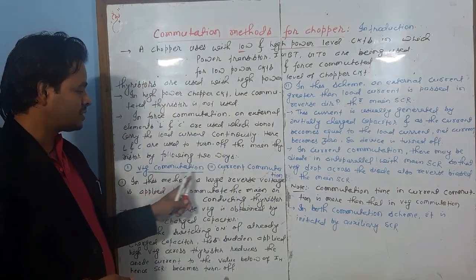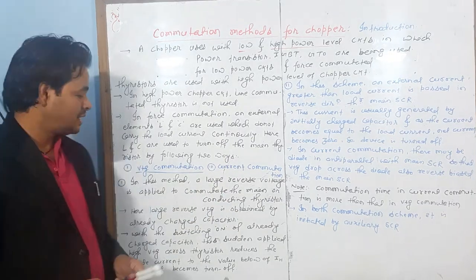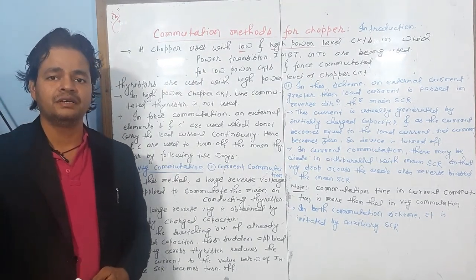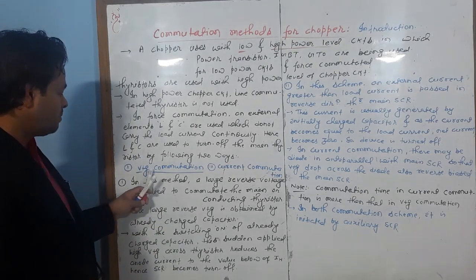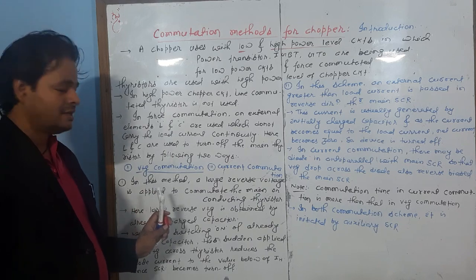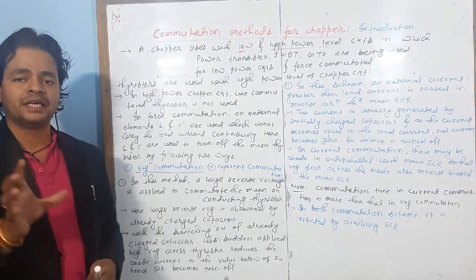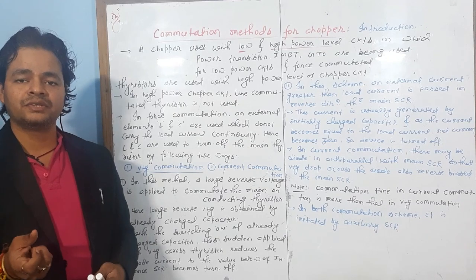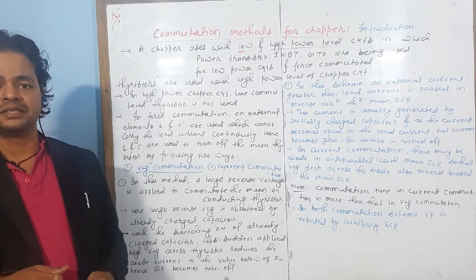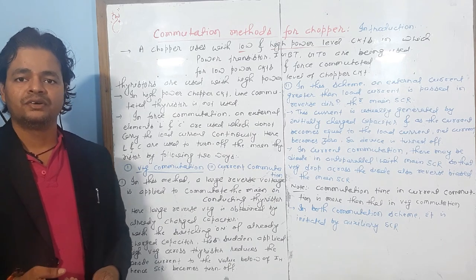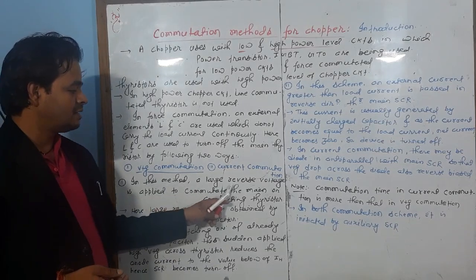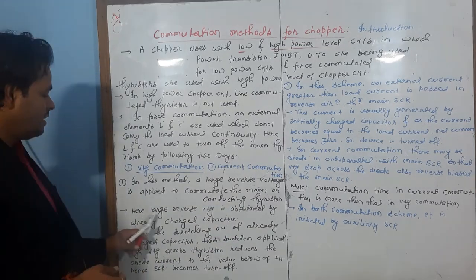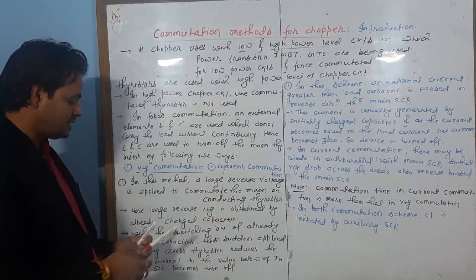The first method is voltage commutation and the second is current commutation. In voltage commutation, a large reverse voltage is applied to commutate the main or conducting thyristor.